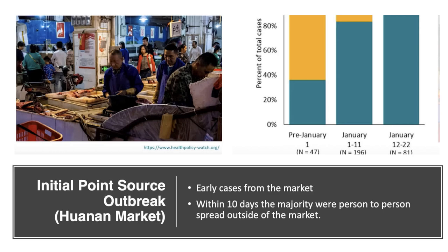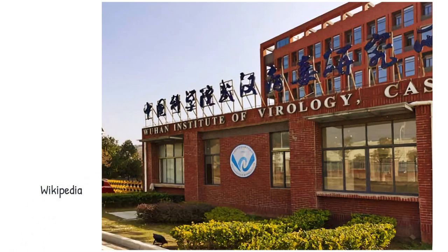There is some debate with regards to when the outbreak began in China. Some suggest a larger number of asymptomatic carriers were spreading the disease before the publicized December outbreak. It has also been suggested that the outbreak began as a laboratory accident in the Wuhan Virology Lab. Given the delays in the investigation and the secretive Chinese government, the true source is unlikely to ever be definitively determined.